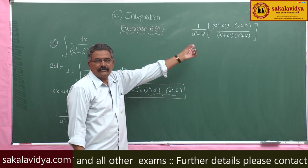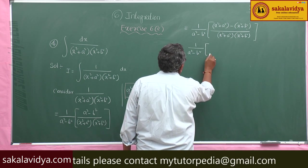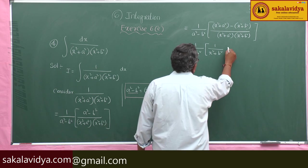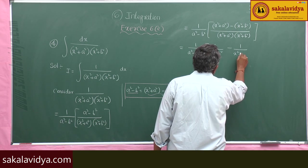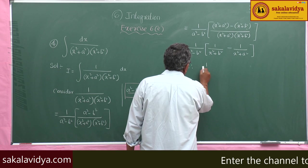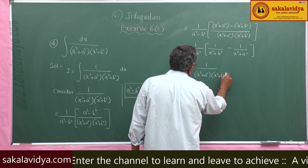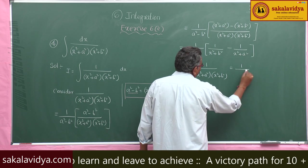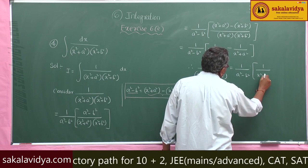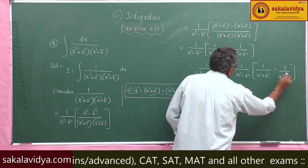We can separate into two terms: 1/(a² - b²) into [1/(x² + b²) minus 1/(x² + a²)]. Therefore, the partial fractions give 1/[(x² + a²)(x² + b²)] equals 1/(a² - b²) into [1/(x² + b²) minus 1/(x² + a²)].